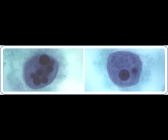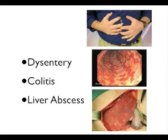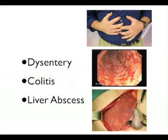Entamoeba histolytica is a protozoan parasite that, in most cases, harmlessly resides in the colon. However, it has the capability to cause dysentery, colitis, and liver abscess.